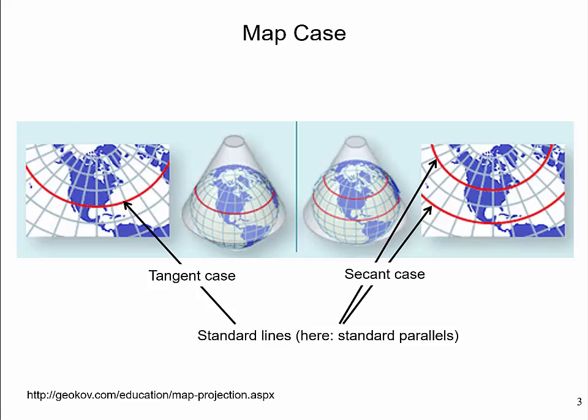The concept of map case is closely related to standard lines. Standard lines are important since points along those lines experience no distortion in a map. Conic map projections can have either one or two standard lines. Generally, if the cone's axis is aligned with the Earth's rotation axis, the standard lines are parallels. The case with one standard line is called the tangent case, where the virtual cone touches the reference globe along one line — in this case a parallel.